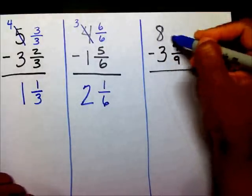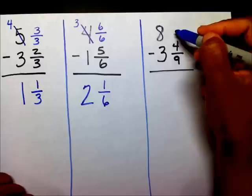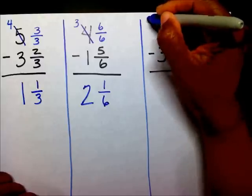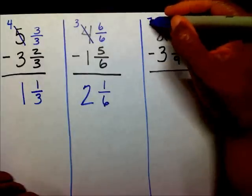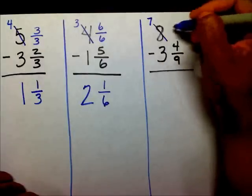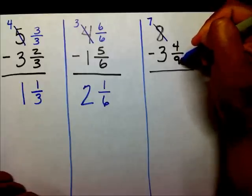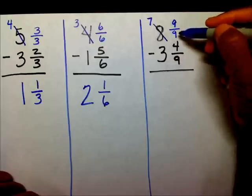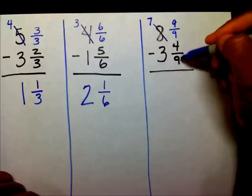Alright. I need a fraction right here so I can subtract this 4/9 from. So, I'm going to go over here and borrow a one from the eight. The eight now becomes a seven. But, now I have seven. I need to put a one right here. Well, what one am I going to choose? Since my denominator is nine, I'm going to choose 9/9. That way, I've created the same denominator.